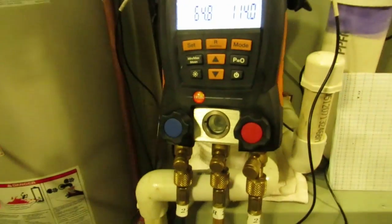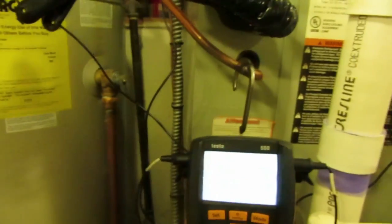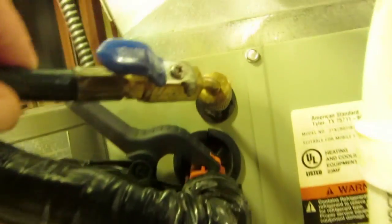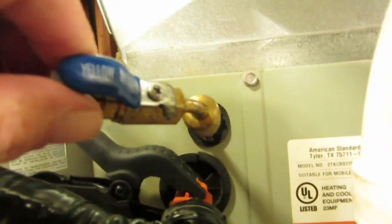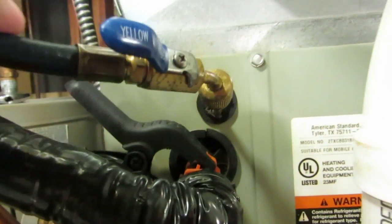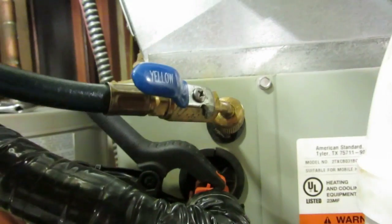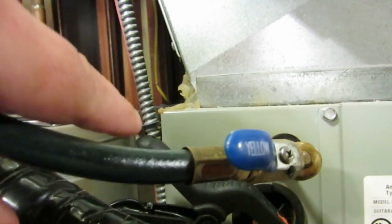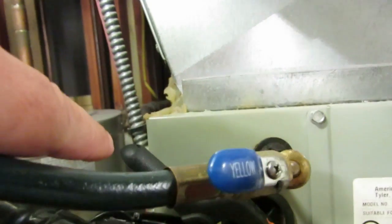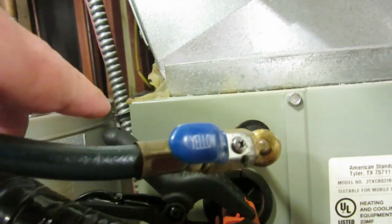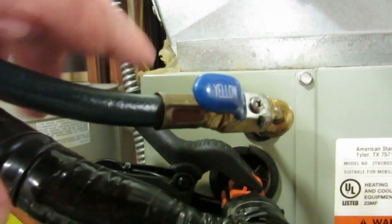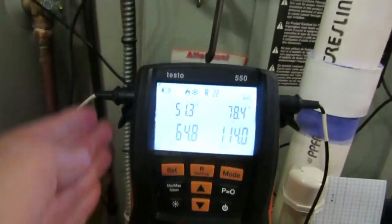Basically what we've done is we've taken the suction side and ran our suction line hose up to our suction line port right here on our American Standard coil, and we removed our CPS compound gauge. We also removed our fill piece with our temperature probe on it and replaced it with our Testo 550 temperature probe which is running back to the suction line of the instrument itself.